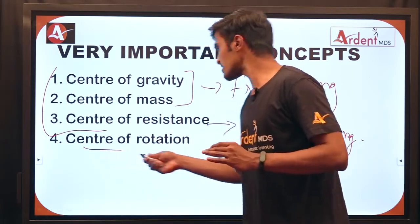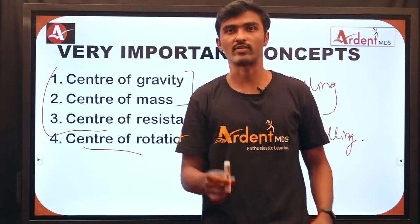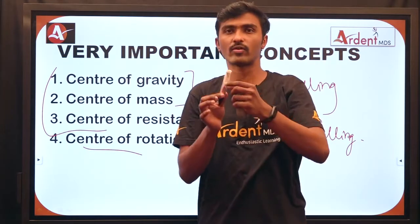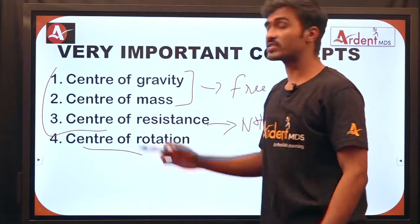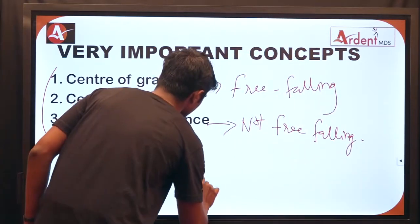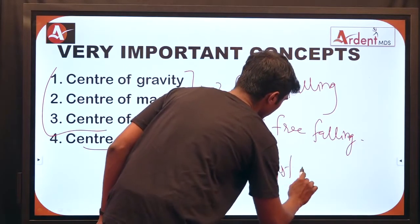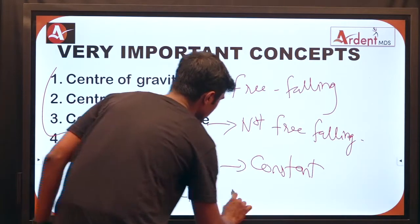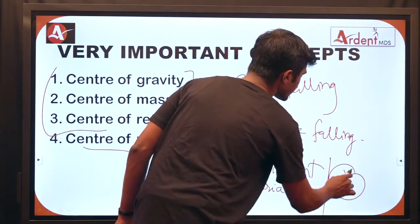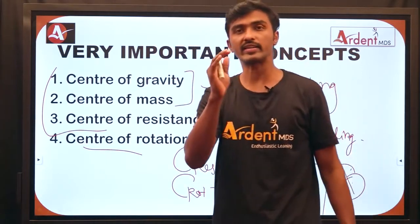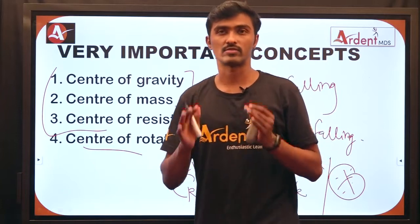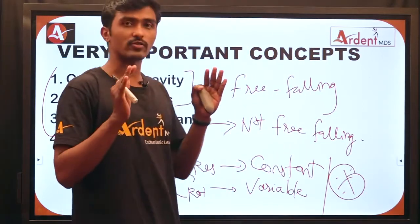Center of rotation is a point around which an object can rotate. For example, if I hold a pen at one end, it rotates like a pendulum; if I hold it at the center, it rotates around that point. An important distinction: center of resistance is constant — it is the point where the entire mass is concentrated and cannot be varied. Center of rotation, however, is variable, depending upon the type of tooth movement.